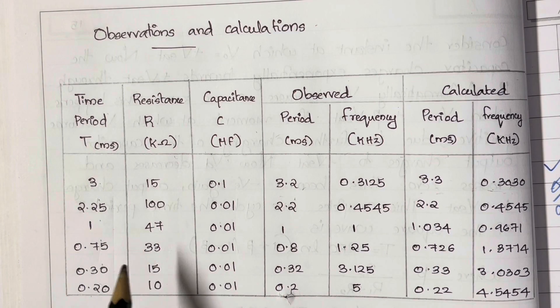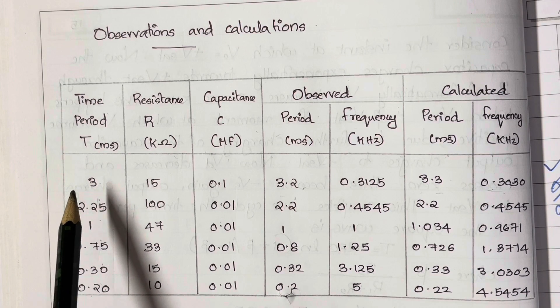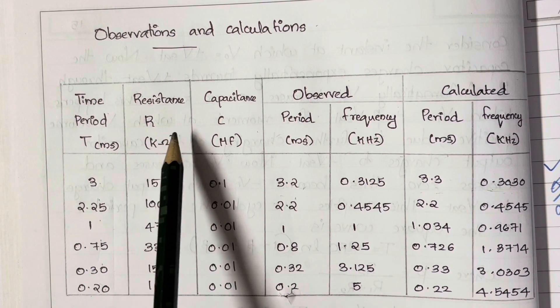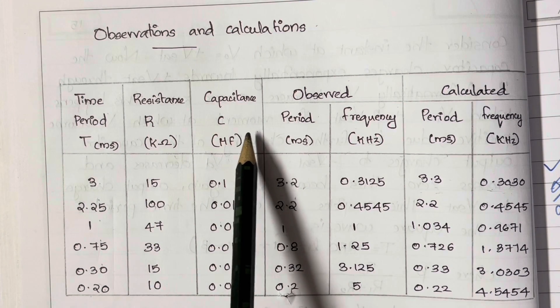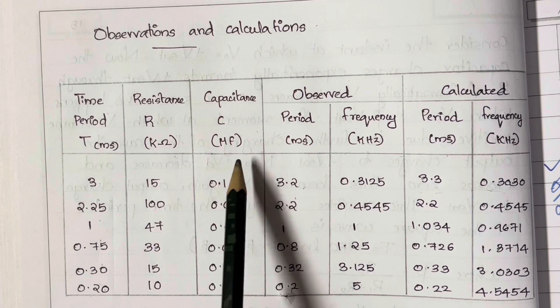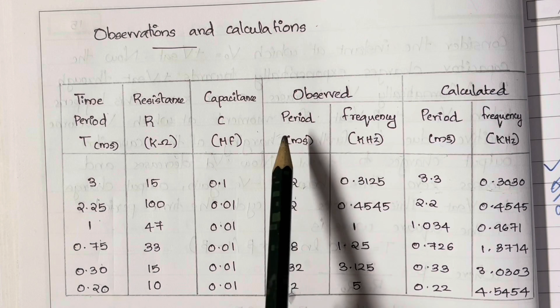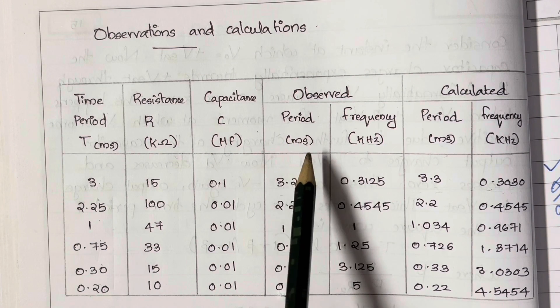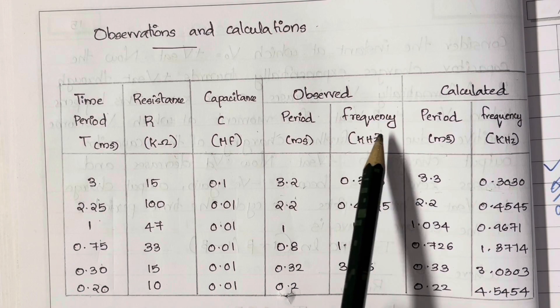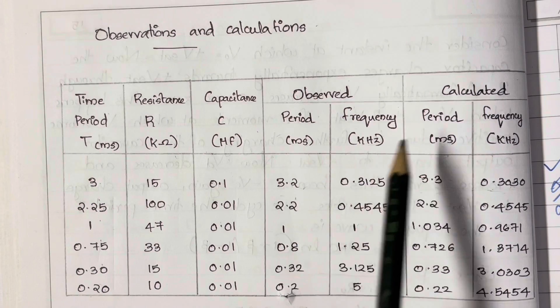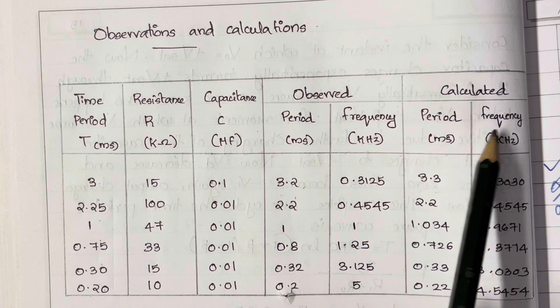You will go through the tabular column. The first column records the time period T using which we calculate R. The second column records the feedback resistance R. The third column records the capacitor value C in microfarad. The next two columns record observed values of frequency and time period that you will get from DSO. If DSO gives you frequency, you can take the reciprocal to find the time period. The last two columns record calculated values of time period and frequency.